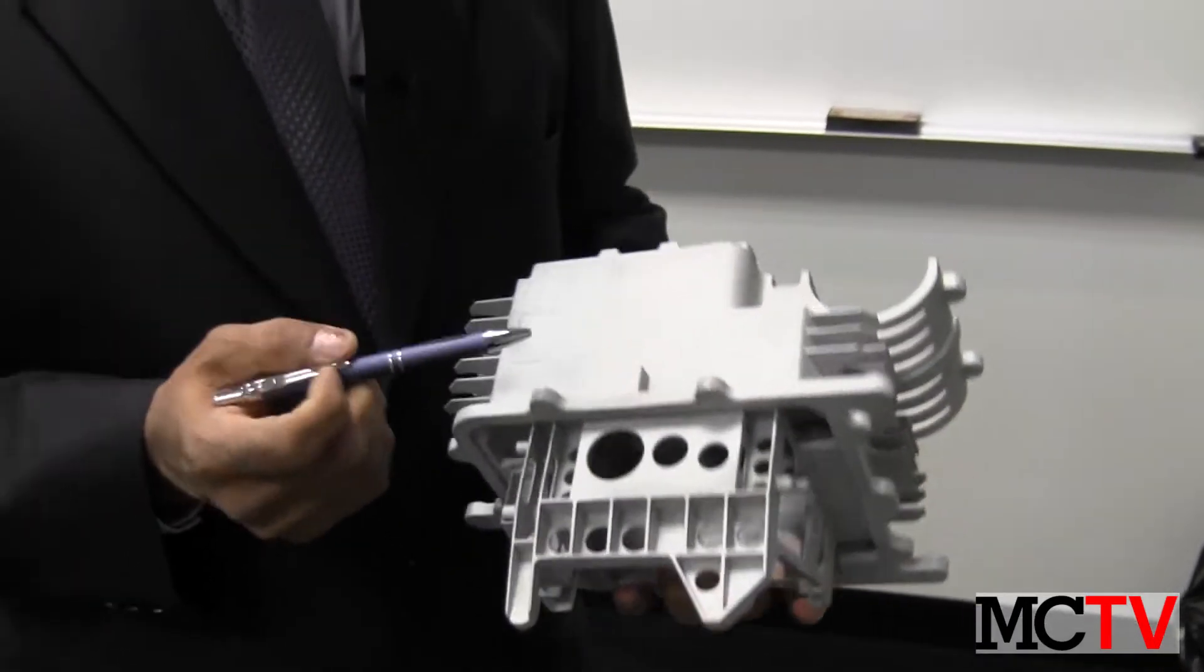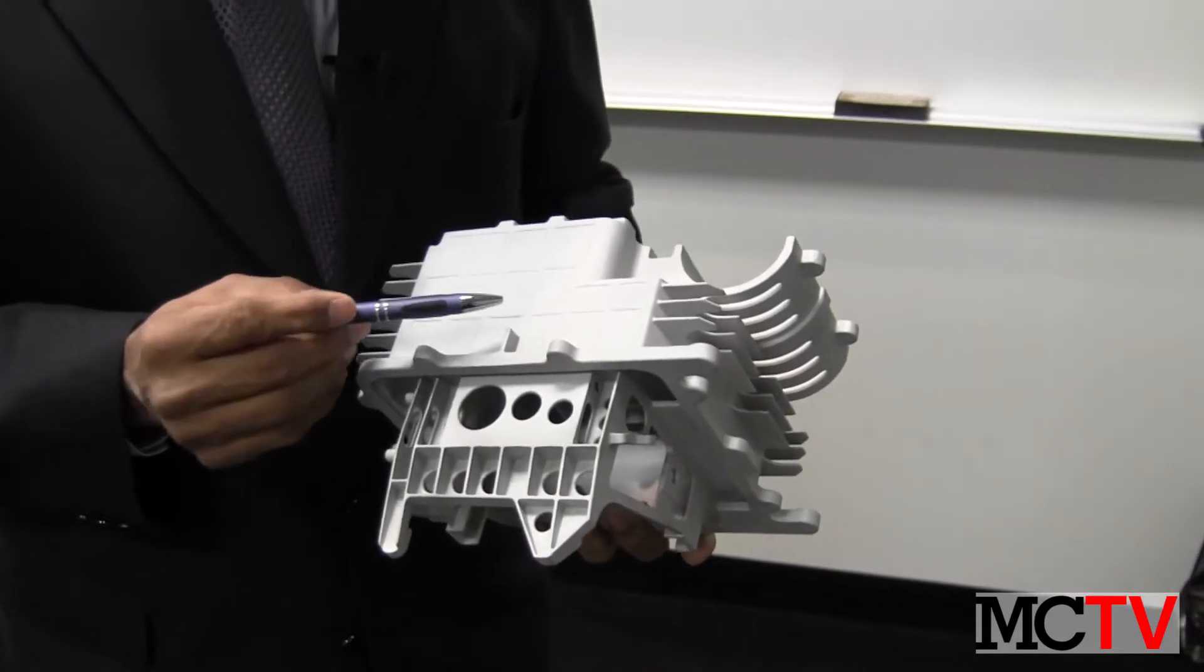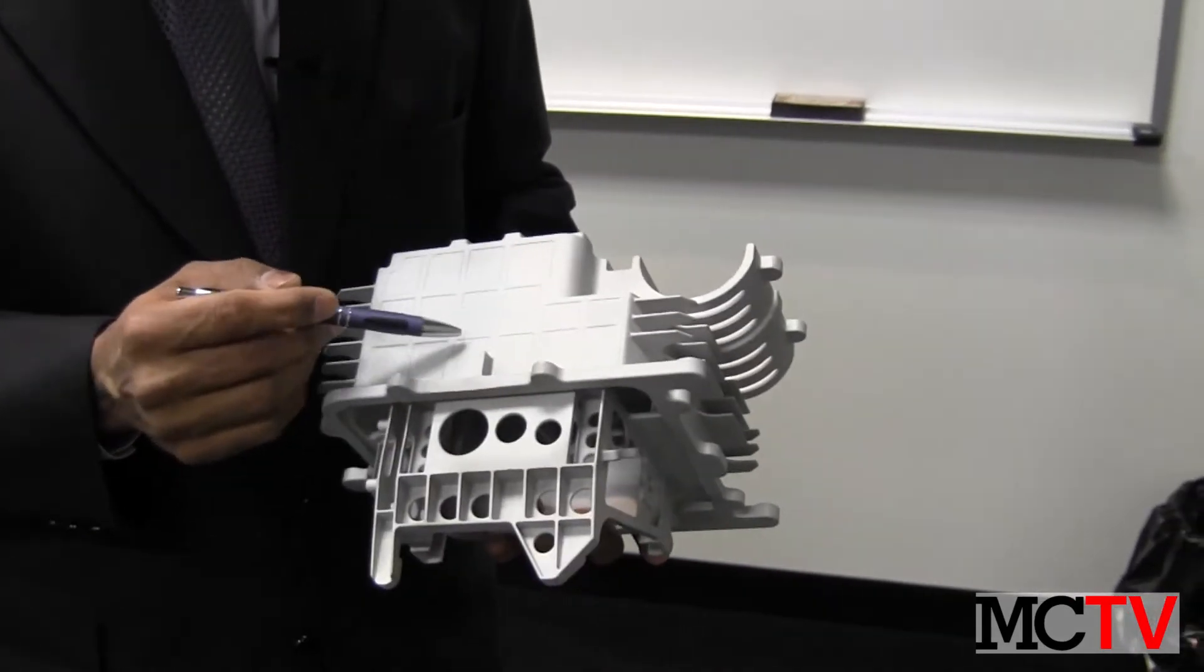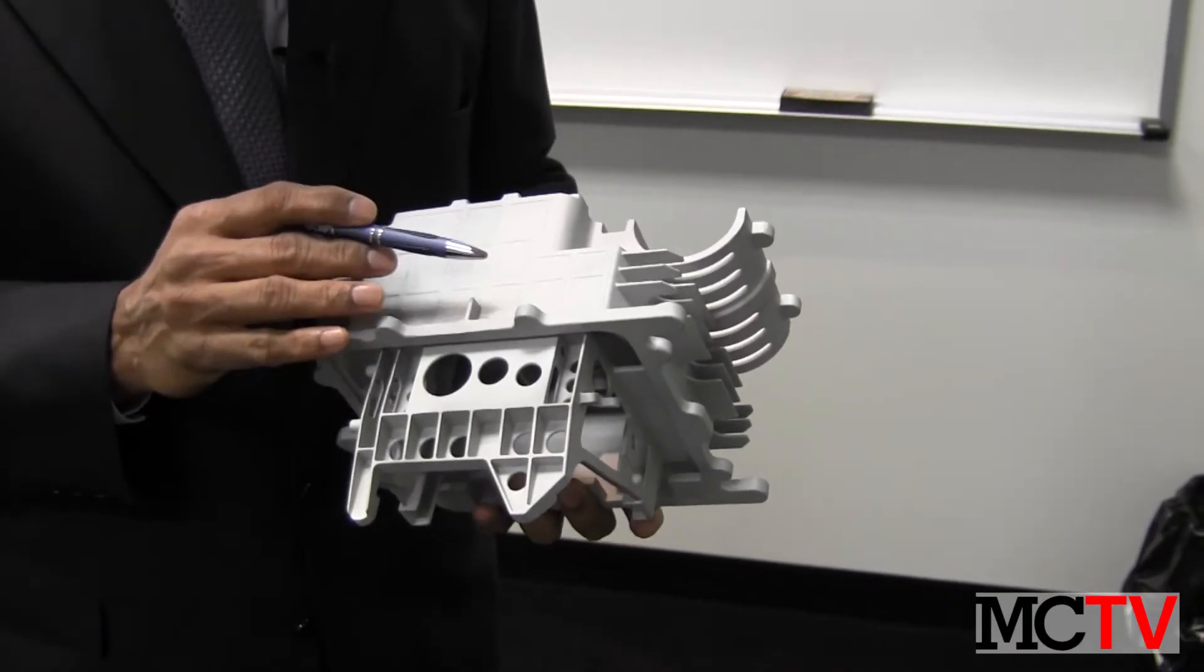With casting, you are able to create gussets, as you can see here, and take the weight out as opposed to a uniform wall thickness.